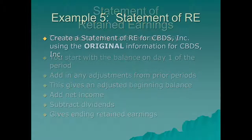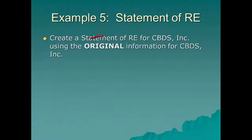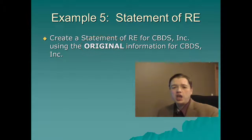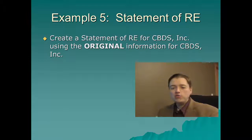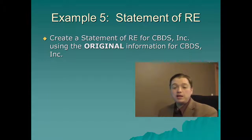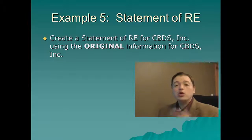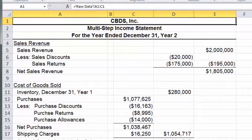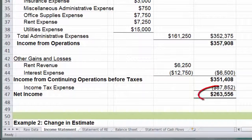So let's go ahead and do one of these for CBDS. We're going to use the information from the original numbers — we're not going to do all those adjustments from the last few segments where we changed depreciation and bad debt expense. We're going to use the original numbers so that as we move through this process everything balances. Because remember, we've got this series: income statement, statement of retained earnings, balance sheet, cash flows. If we use different numbers in our income statement, it's not going to balance all the way through. Specifically, I want to use this net income number: 263,556.